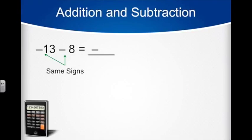Now that we know the sign of our answer, since the signs are the same, we need to add the digits. 13 plus 8 is 21, so now we know our answer is negative 21.